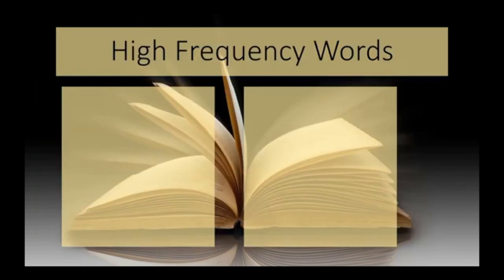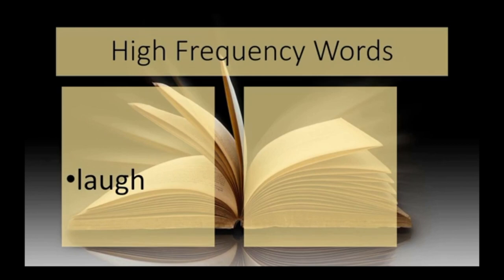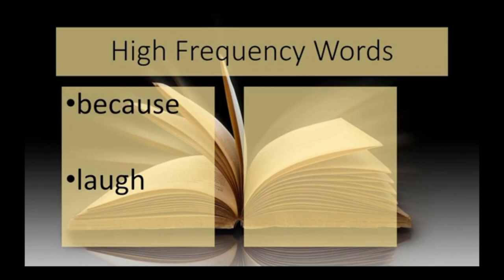We're going to go over the high frequency words. Remember, you want to spell the words as you see them — tap them on your tabletop. The first one is laugh: L-A-U-G-H. Take a moment to think of a sentence using the word laugh. Next is because: B-E-C-A-U-S-E. Take a moment to think of a sentence with the word because.